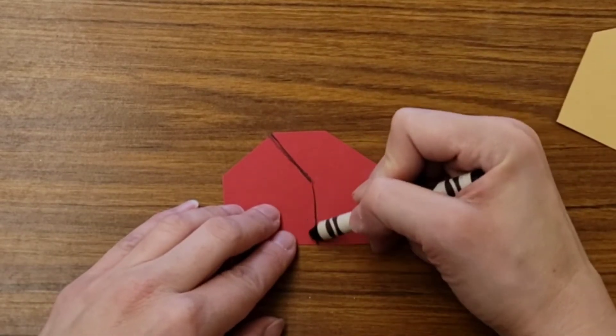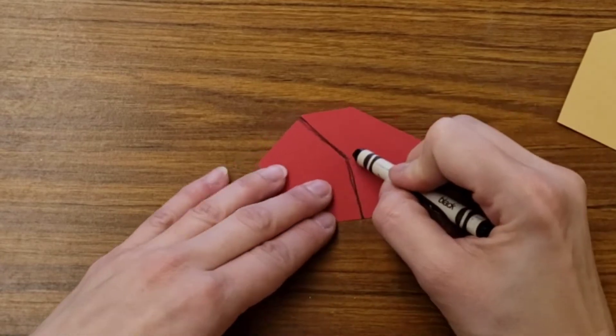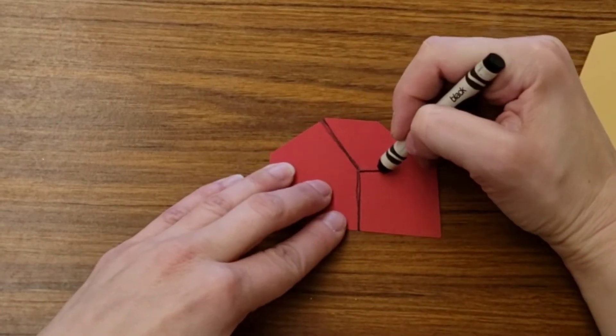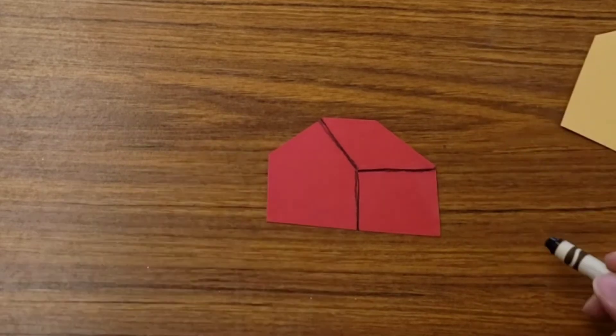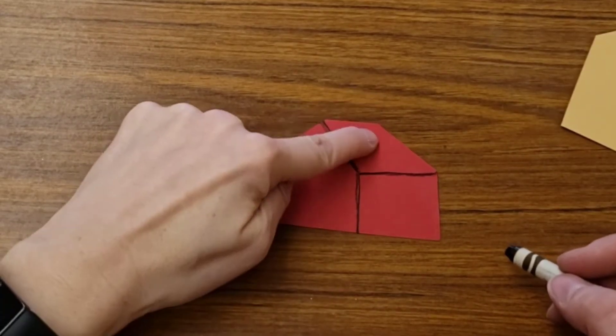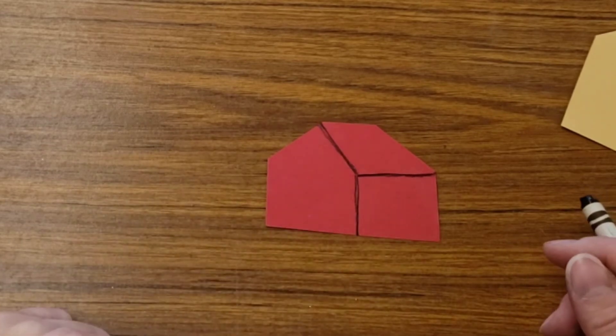Then I'm going to draw a line that goes down, and one that goes horizontal. So it looks like you took a Y and knocked part of it over. And this horizontal line touches the corner. Now we can see the front, the roof, and the side.